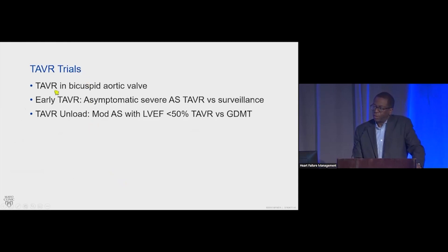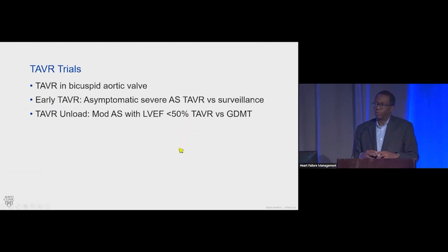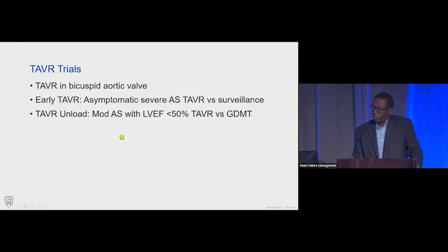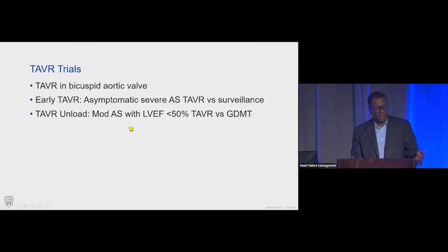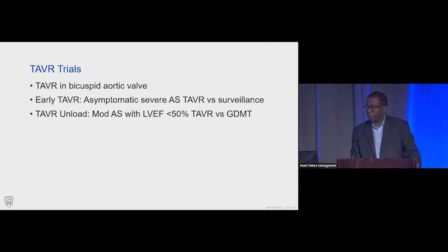There are ongoing TAVR trials looking at TAVR in bicuspid aortic valves. There's also the Early TAVR trial — asymptomatic severe aortic valve stenosis versus surveillance — a hot topic of when to intervene in someone with asymptomatic aortic stenosis and normal ejection fraction. And then there's TAVR Unload: a trial for patients with moderate aortic stenosis but reduced LVEF below 50% who are symptomatic, testing whether TAVR versus guideline-directed medical therapy would be beneficial.